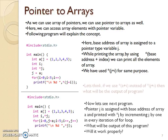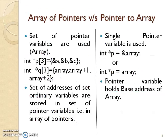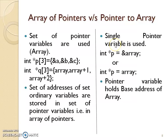Now, let's look at the difference between array of pointers and pointer to arrays. In array of pointers, pointer variables are used where addresses are stored that may be of separate variables or arrays. In pointer to arrays, a single pointer variable is assigned the base address of an array, and it uses a set of addresses within that pointer type variable.